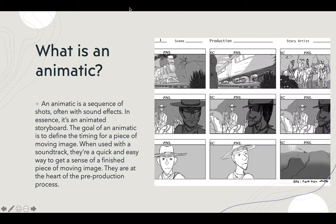So you may ask, what's an animatic? Well, it's basically just giving a visual representation of your story. It's a visual sequence of shots set up with timing and with sound effects. Really, the goal is just kind of setting up the timing — it's almost like halfway between an animation and a comic. And when you're done, this is going to be kind of a template for you to animate over. This is the heart of the pre-production process.